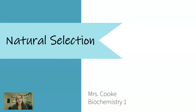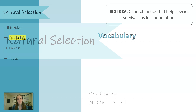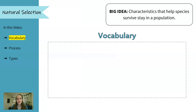Hi scientists! Today we'll be talking about natural selection. Our big idea is that characteristics or traits that help a species survive stay in the population, which means that offspring will continue to be born with these characteristics.